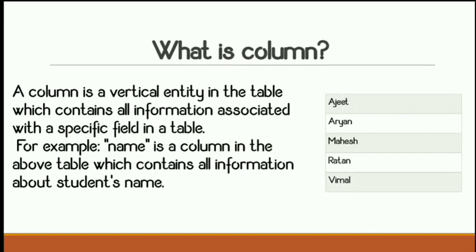A column is a vertical entity in the table which consists of all the information associated with a specific field. For example, the name column contains entries like Ajit, Arian, Mahesh, Rat, and Vimal. So, the name column holds all the student name information in the table.